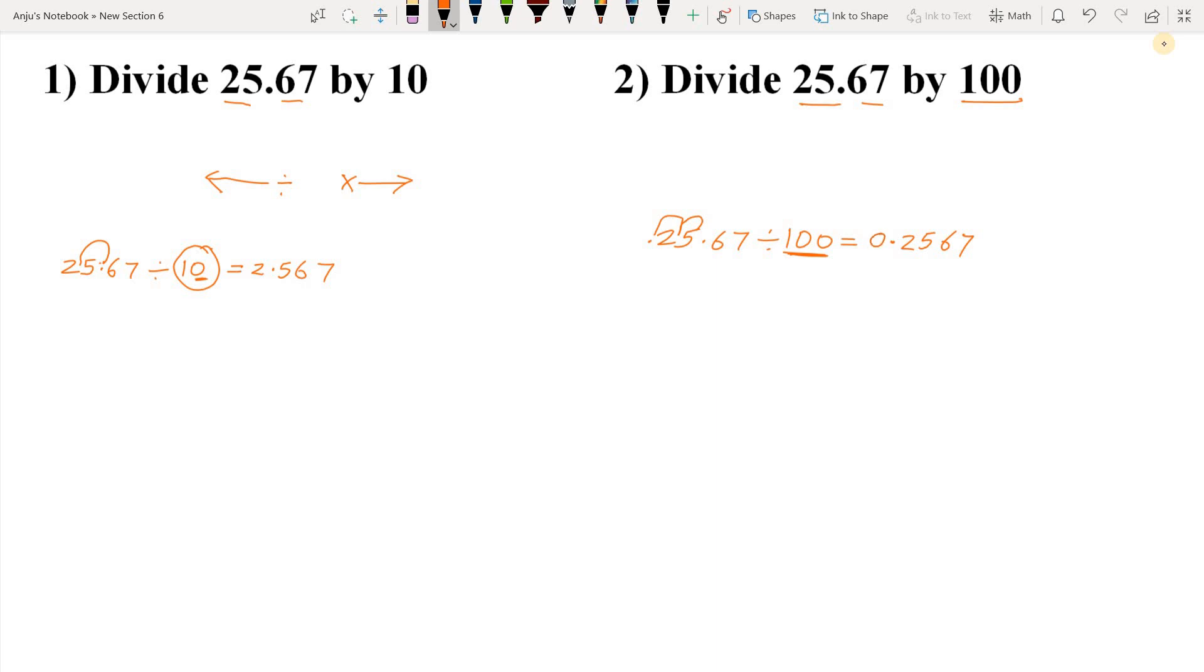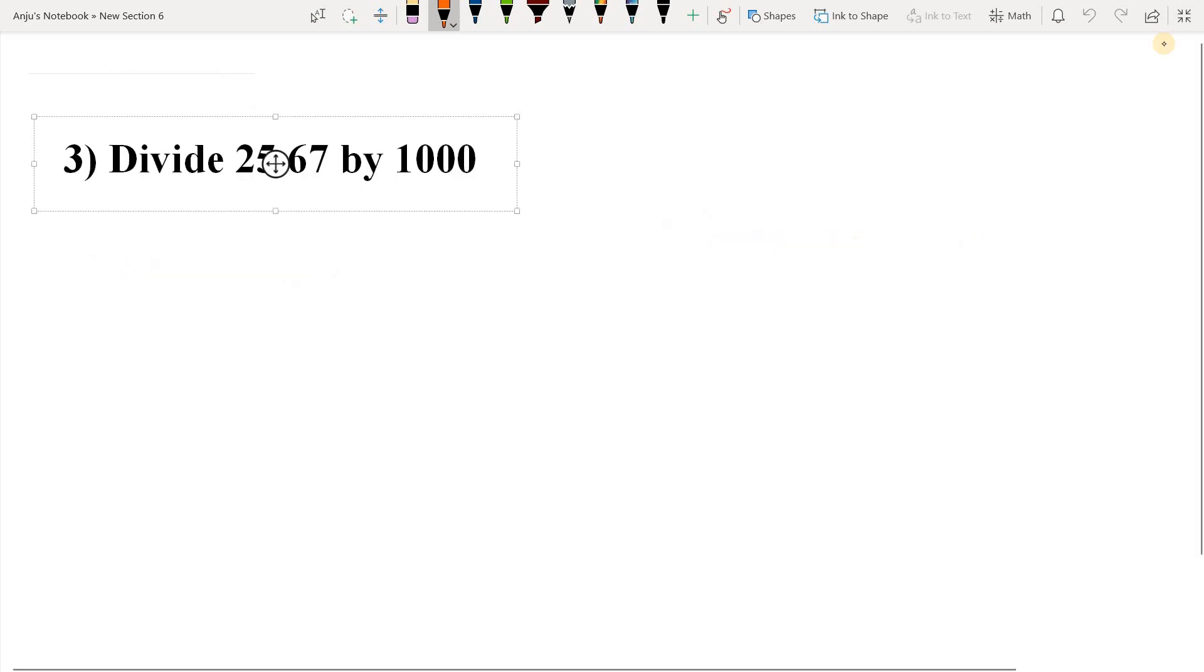Now example third: Divide 25.67 by 1000. So students, here we have to divide by 1000. So the decimal point will move three digits from right to left. Let's write the answer.